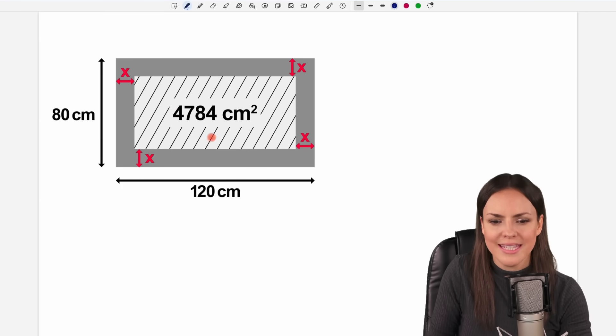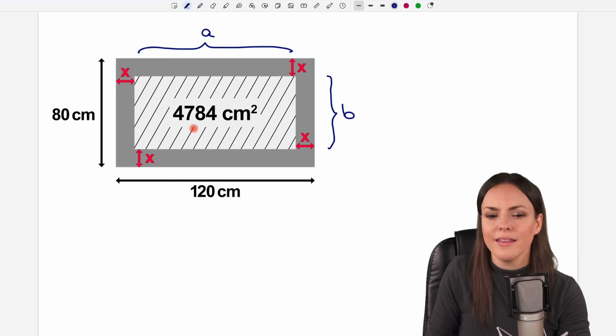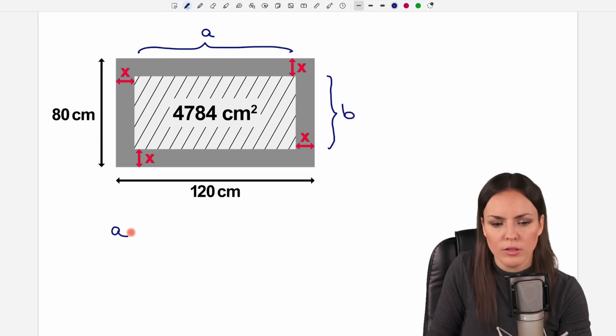Maybe we start with this area here in the middle because we already get the size of this area. Let's call one of the sides of this rectangle here A and the length of the other side of this rectangle B. And then we find this area by just taking A times B. So A times B gives us the area of this rectangle and this is 4,784.